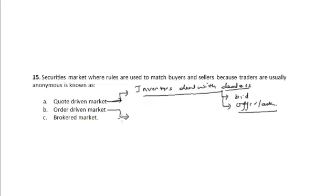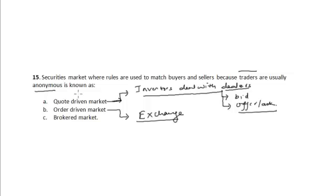In case of an order-driven market, orders are executed using trade rules and they are organized on the exchange. The traders are usually anonymous and the price is determined by the equilibrium of demand and supply of that security.